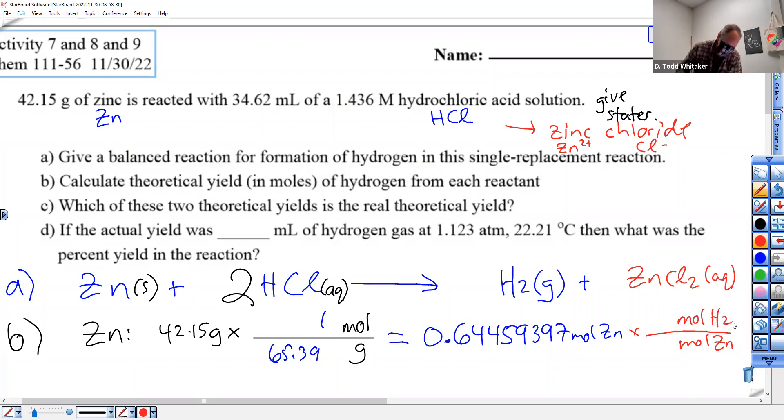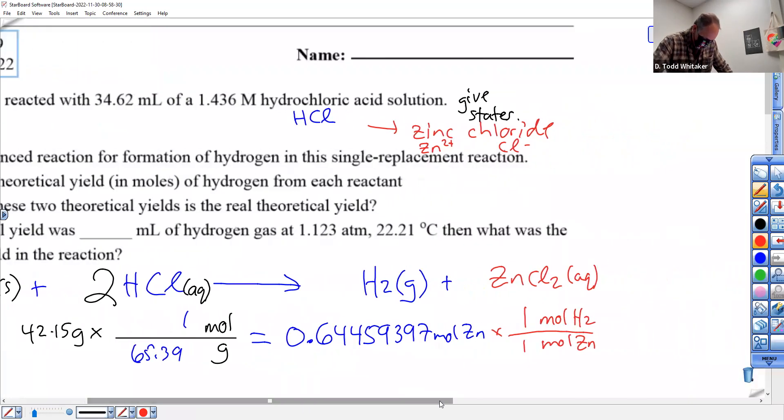Now, I can use coefficients to get rid of moles zinc and get me moles H2. That's the gas, right? What's in front of the H2? What's in front of the zinc? Uno a uno. I got the answer for you. 0.6446 moles H2. That could be our theoretical yield. It might not be. Depends on if it's bigger or smaller than the moles H2 for the other chemical.